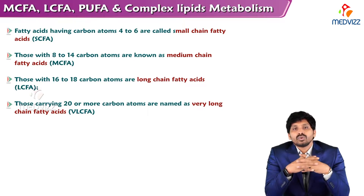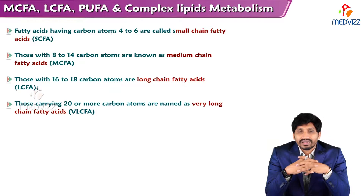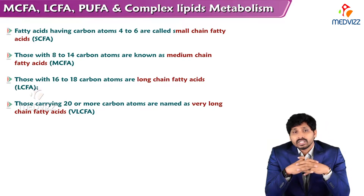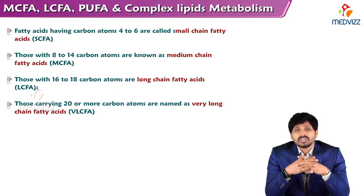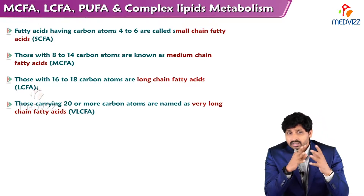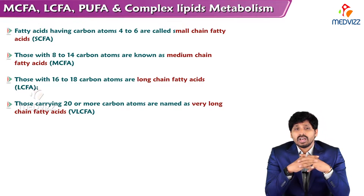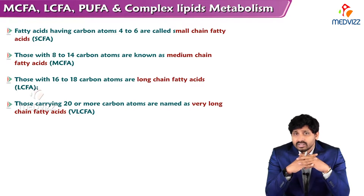Fatty acids having four to six carbon atoms come under the category of small chain fatty acids, like butyric acid and propionic acid. Fatty acids having eight to fourteen carbons come under medium chain fatty acids, like caproic acid and lapic acid. Those with sixteen to eighteen carbons are long chain fatty acids like oleic acid and palmitic acid. Fatty acids having more than 20 carbons in the chain come under very long chain fatty acids.